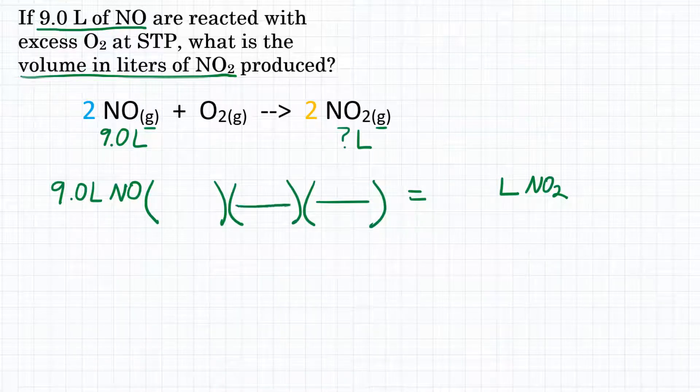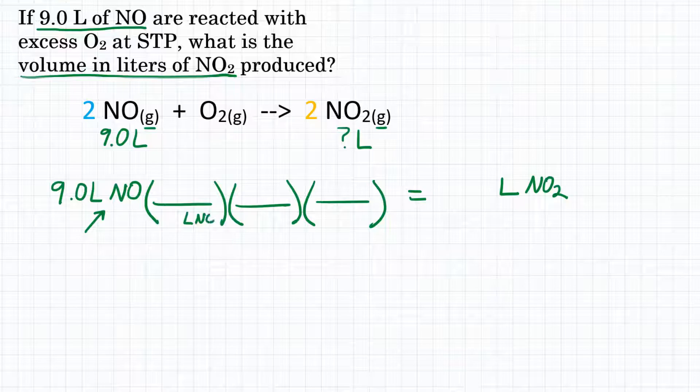However, because this problem is going volume to volume or liters to liters, you really only need one step for this. I'll show you that after we do the complete stoichiometry here. If we're starting with liters of NO2, that's our unit that we're beginning with, we need to put that on the bottom of our first conversion factor so it cancels out. In stoichiometry, you always want to get to moles first.